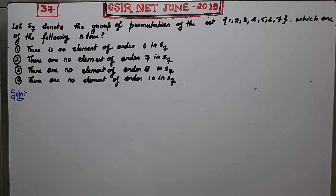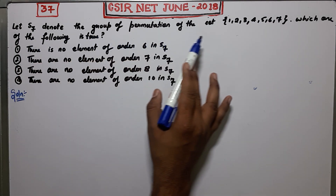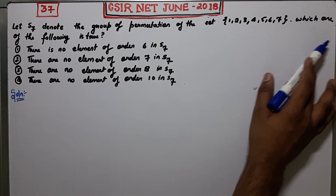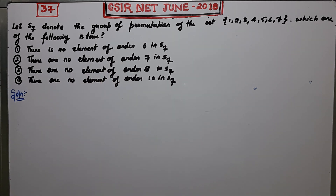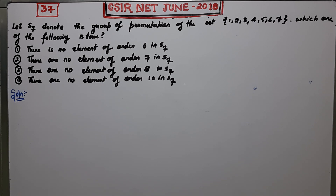Welcome. This is question number 37 of CSI NET June 2018, a question of abstract algebra from part B of the paper. Let S7 denote the group of permutations. Which one of the following is true? S7 is a permutation group on 7 symbols. The options are: there is no element of order 6, no element of order 7, no element of order 8, and no element of order 10 in S7.